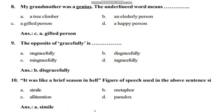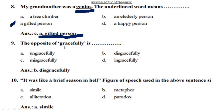Next question: 'My grandmother was a genius' — the underlined word 'genius' means — Option A: a tree climber, Option B: an elderly person, Option C: a gifted person, Option D: a happy person. The right answer is Option C — a gifted person.